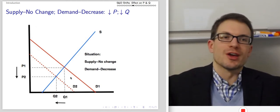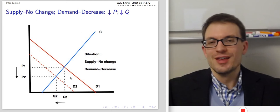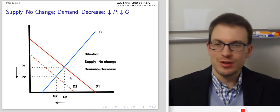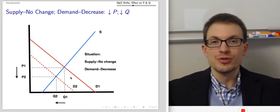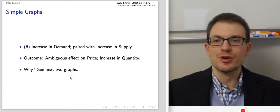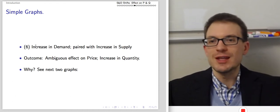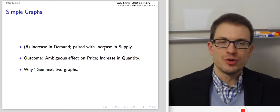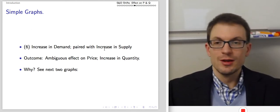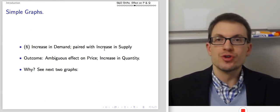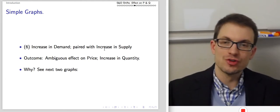Those are all the things that can happen if you have just one curve shifting — either an increase or a decrease of the supply or the demand curve. It's pretty straightforward: just draw the picture, draw that shift, and you'll see what happens to price and quantity in equilibrium. Now suppose we have two curves shifting. In that case, we need to draw two graphs because we do not know the relative size of these shifts. Suppose we have an increase in demand and an increase in supply — we don't know which is bigger, or if supply is getting the bigger shift. So we'll draw two hypothetical pictures.